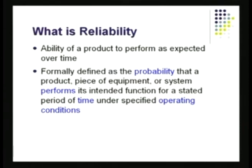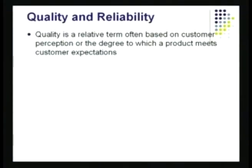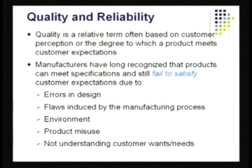Reliability is defined as the probability that the product will perform over a specified period of time under specified operating conditions satisfactorily. Quality is a customer perception term, while reliability is basically related to performance — it looks at the chance of preventing failure to satisfy the customer's requirement. There could be errors in design leading to reliability questions, flaws introduced by the manufacturing process, environmental impacts, product misuse, or incomplete understanding of the customer's wants and needs.